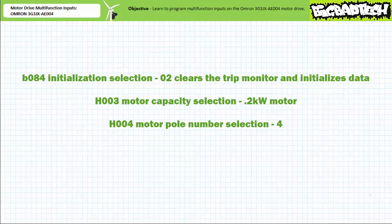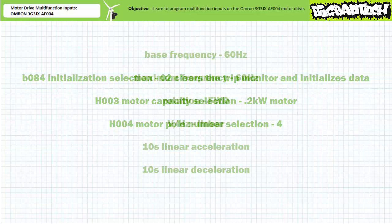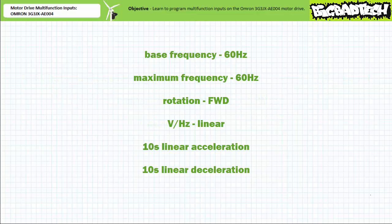Due to space constraints, we won't be using an external speed potentiometer input for this exercise, but rather using the frequency adjustment knob in the digital operator group. This start state establishes a 60 hertz base frequency, a 60 hertz maximum frequency, forward default rotation, a linear volts per hertz ratio, a 10 second linear acceleration, and a 10 second linear deceleration time, among other properties. Given this start state, the motor drive is now ready for today's activities.